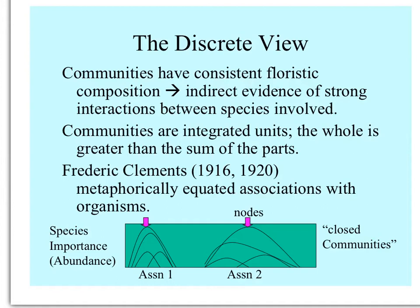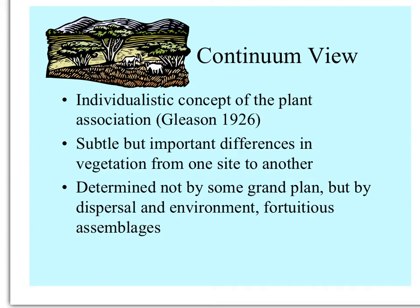These coexistence zones are called nodes. In this view, communities were set or closed. A more modern view, at least at the beginning of the 20th century, was the continuum view. Henry Gleason published a book heralding the individualistic concept of the plant association, saying that communities were different almost everywhere they existed because of the different coincidences of plant species according to whatever requirements of the habitat affected their distribution.